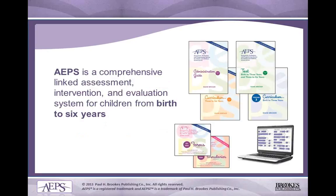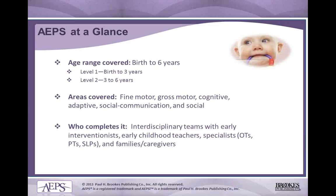You've heard us talk about the AAPS several times. What is the AAPS? AAPS, or Assessment, Evaluation, and Programming System, is a comprehensive linked assessment, intervention, and evaluation system for children from birth to six years. The AAPS covers birth to six years but splits it into two separate assessment levels: Level 1, which covers birth to three, and Level 2, which covers three to six years. The areas covered — also referred to as curricular areas — are fine motor, gross motor, adaptive, cognitive, social, and social communication.